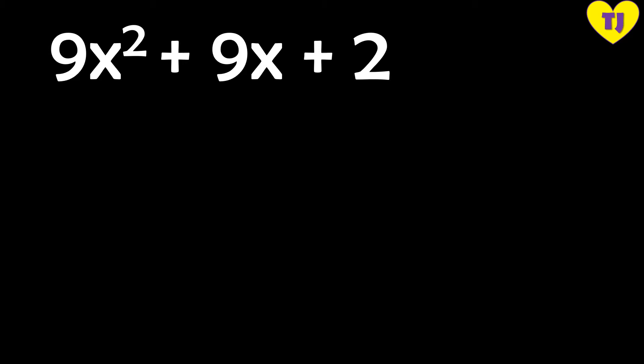The first example is 9x squared plus 9x plus 2. When factoring trinomials, look at the format: this is our a, this is our b, and this is our c, according to the format ax squared plus bx plus c. Now, if your a is not equal to 1, we cannot use the usual factoring method.